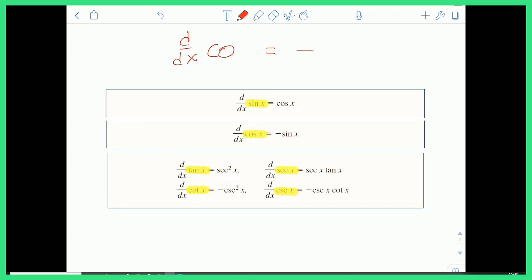Also you can remember that tangent and secant hang out together. So when you take the derivative of tangent, it's secant squared, and secant is secant tan. So secant and tan are kind of in each other's derivatives. And the same goes for cotan and cosecant.